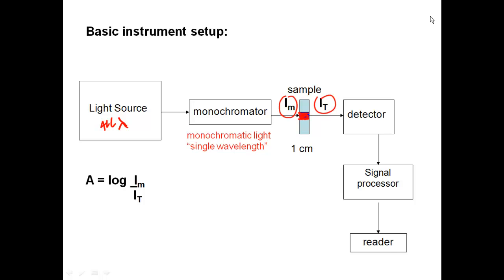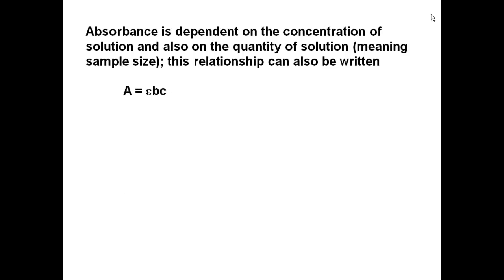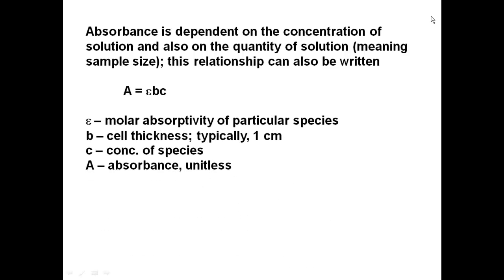We can rearrange this relationship into a more usable equation. Absorbance is dependent on both the concentration of the solution and the quantity of the solution — meaning the sample size. We write this as A equals epsilon times B times C, where epsilon is the molar absorptivity of a particular species (a constant for that species), B is the cell thickness (typically about one centimeter for the cuvette used in this experiment), and C is the concentration of the species. A is the absorbance and it is a unitless quantity.